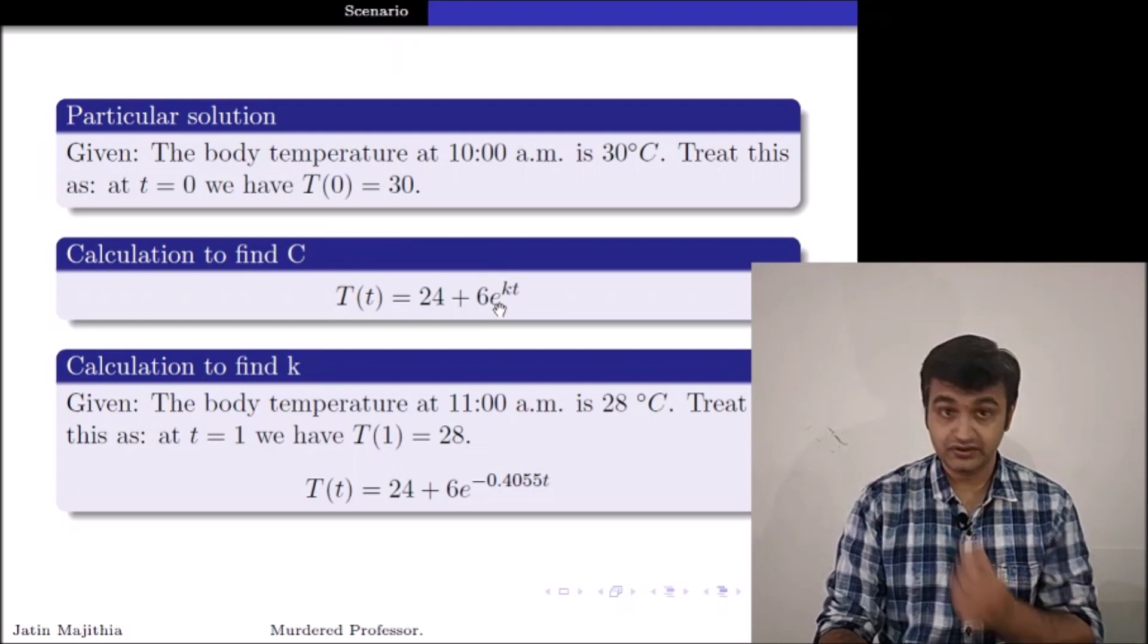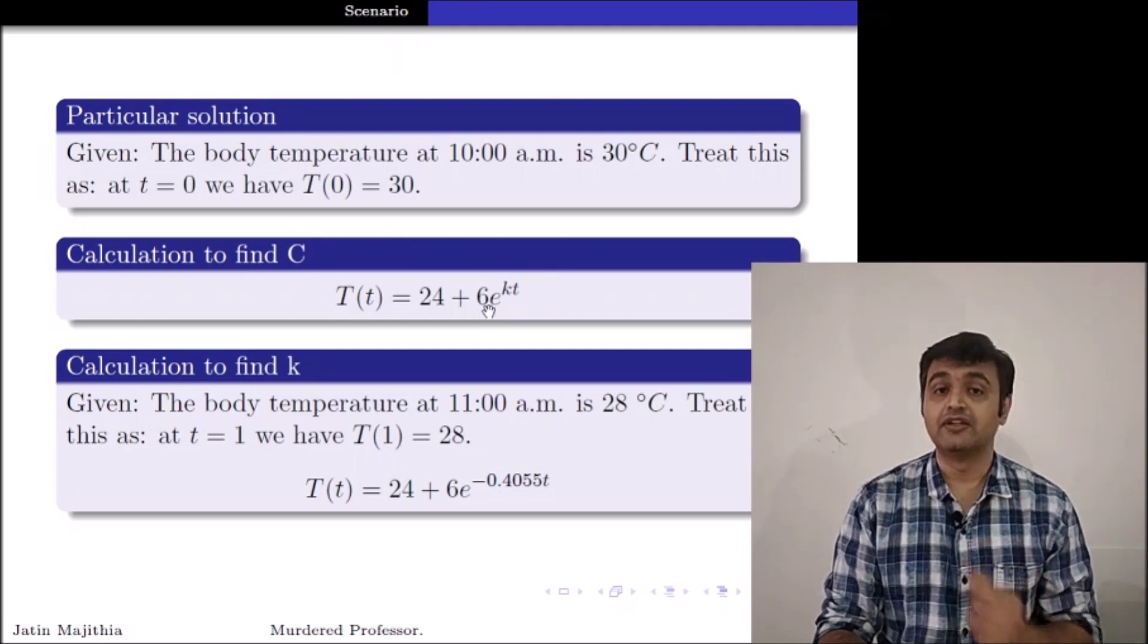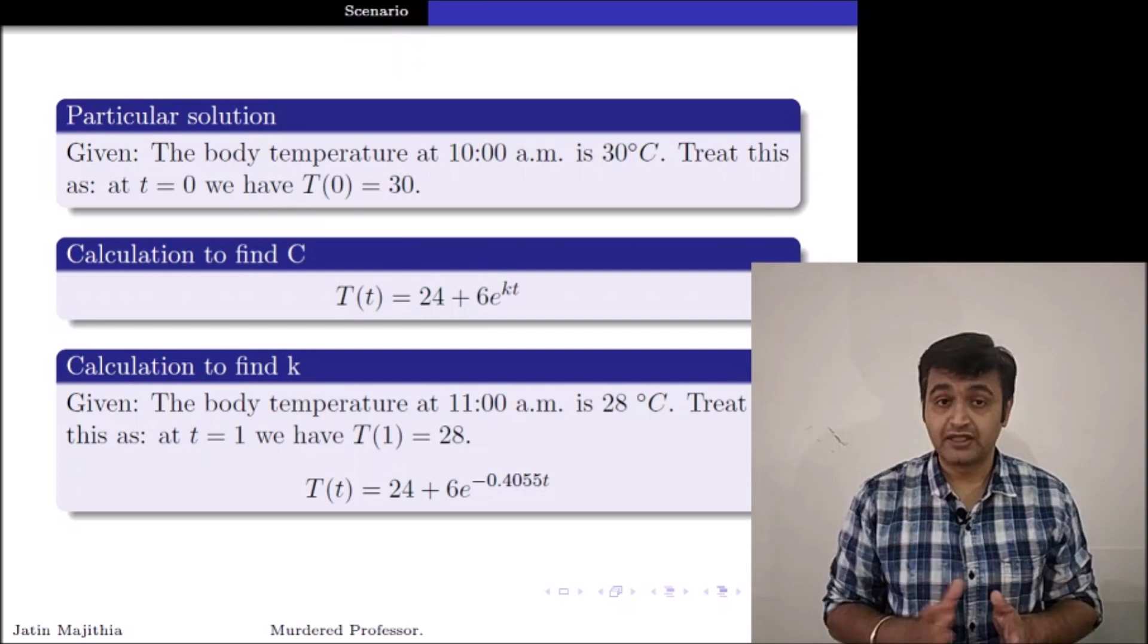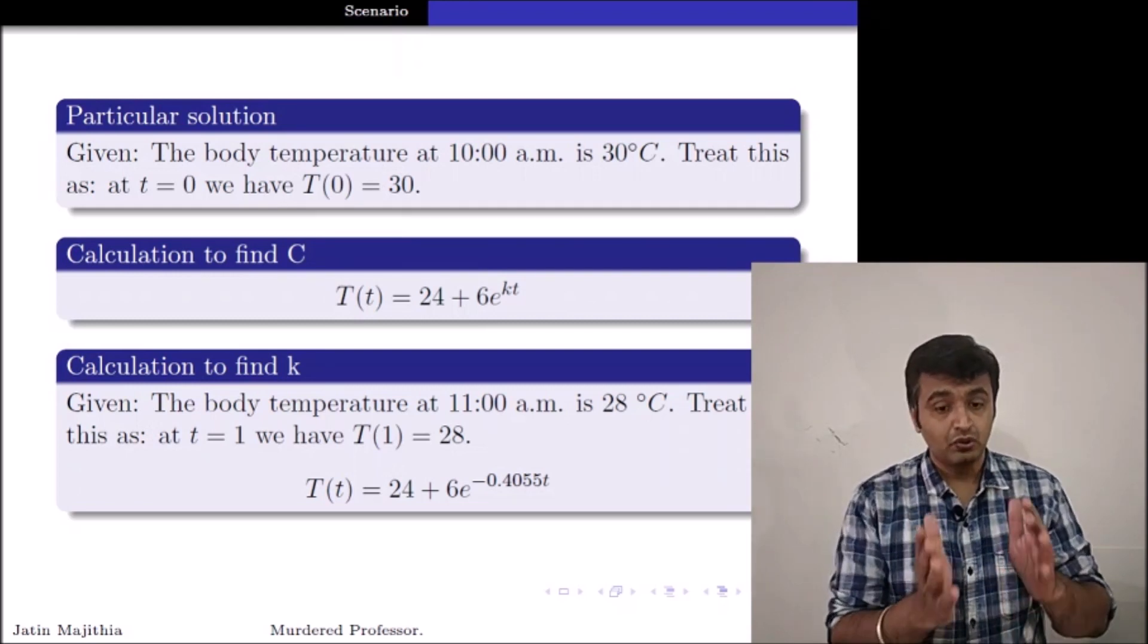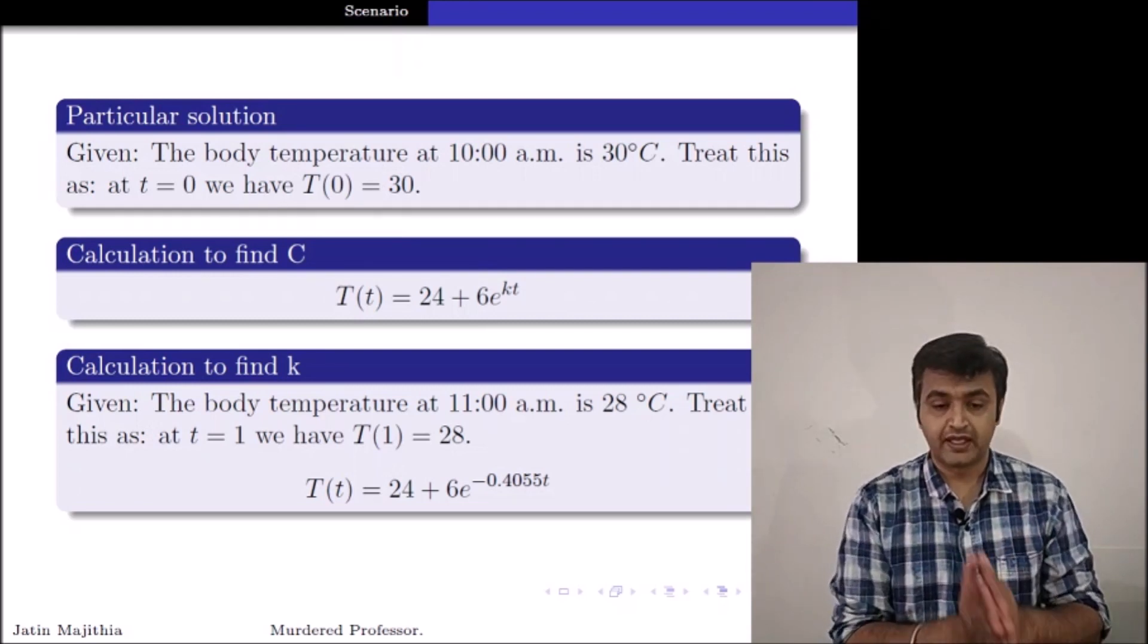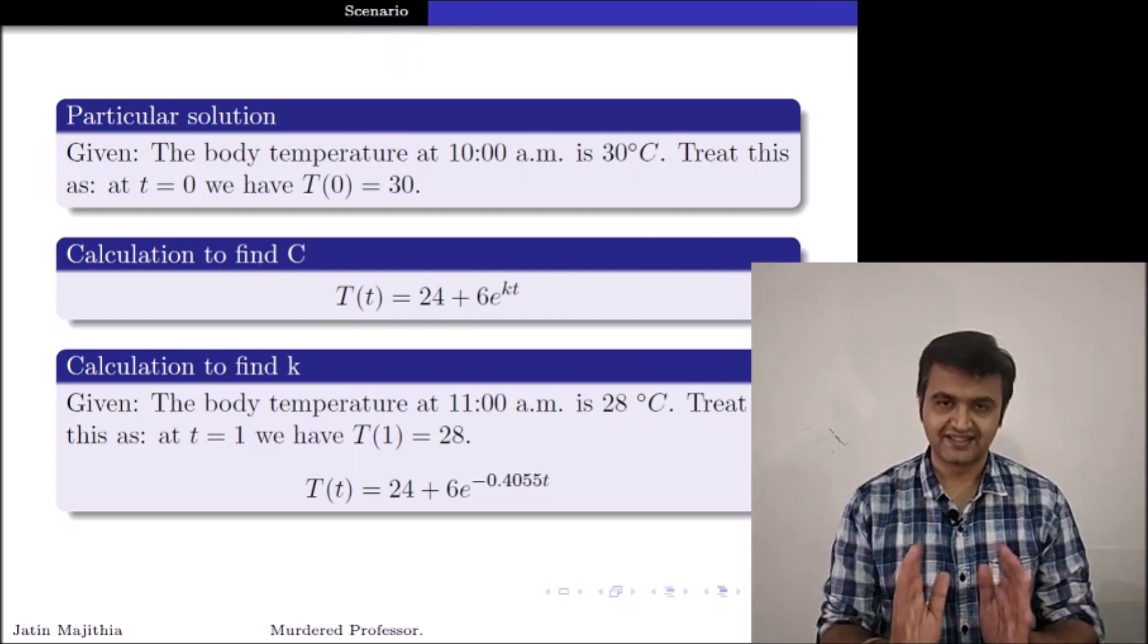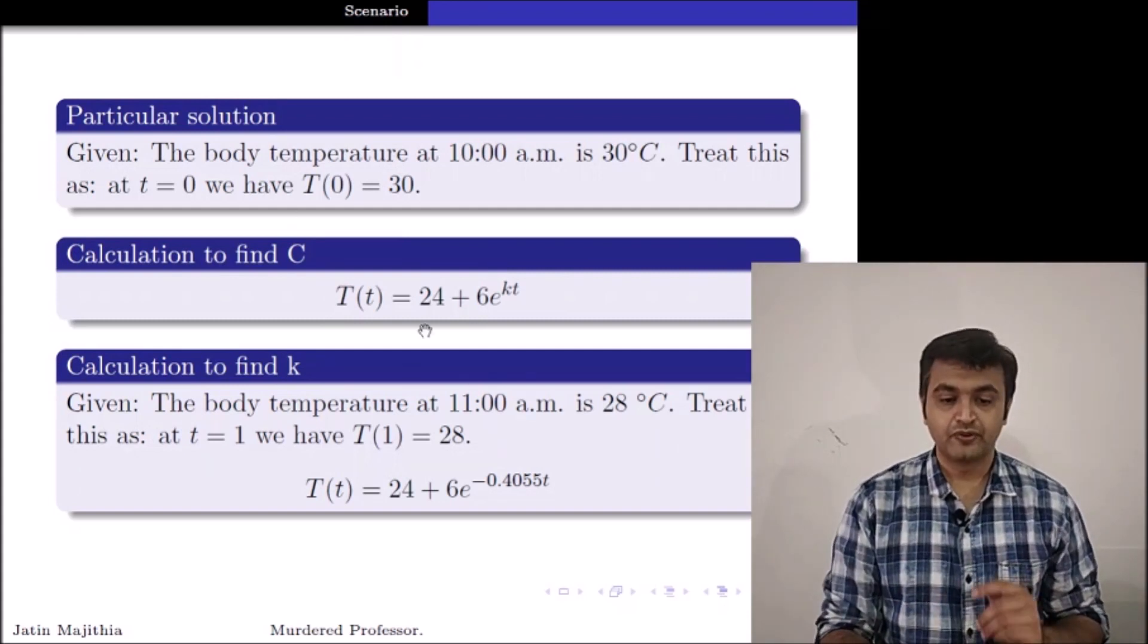So if I do that, T of 0 equal to 30. If I put T equal to 0, small t, what I get? I get the value of C. Again, as I said, if you are from mathematical background, I will suggest you to please do this calculation. And if you do not want to do, you can trust me. The calculations are correct.